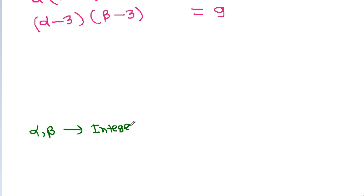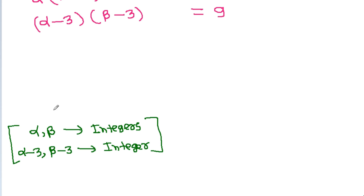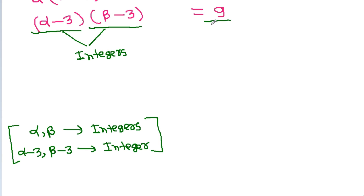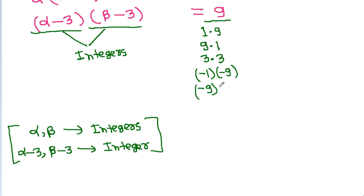Since α and β are integers, (α−3) and (β−3) are also integers, and their product is 9. So the integer factor pairs of 9 are: 1×9, 9×1, 3×3, (−1)×(−9), (−9)×(−1), and (−3)×(−3).